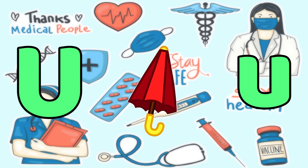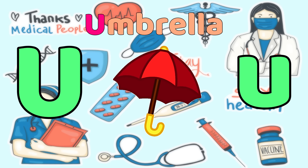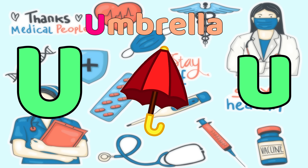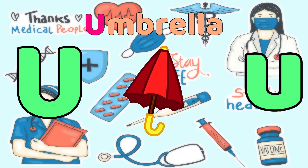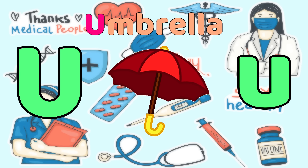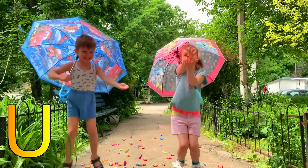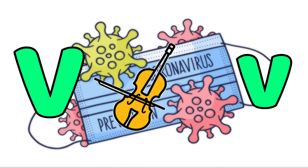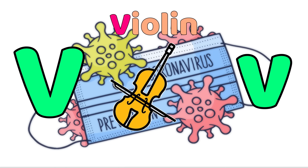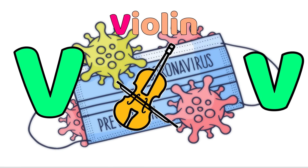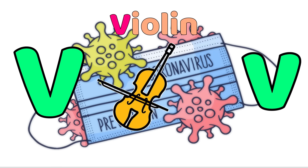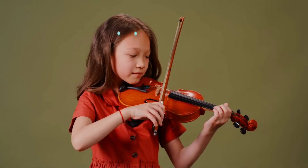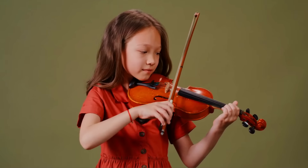U is for Umbrella. U, Umbrella. U, Umbrella. U, Umbrella. V is for Violin. V, Violin. V, Violin. V, Violin.